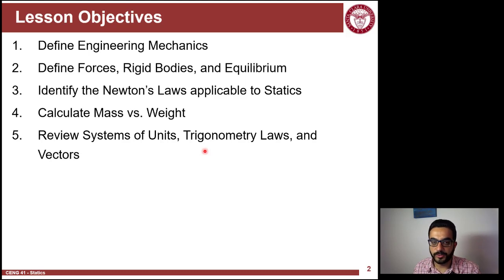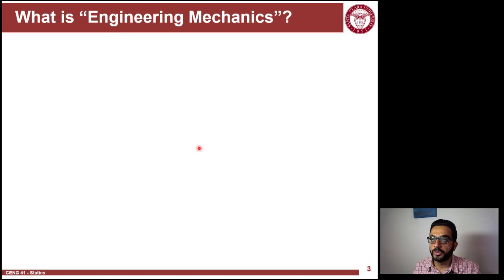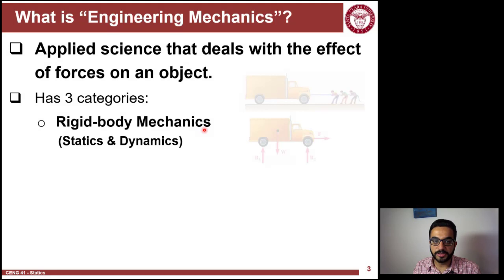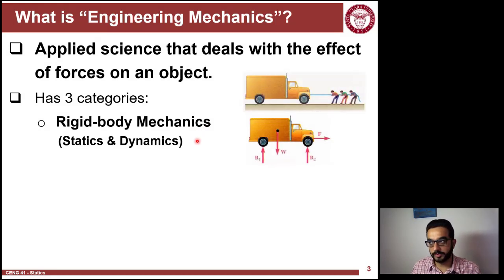What is Engineering Mechanics? It's an applied science that deals with the effect of forces on an object. There are three categories that relate to this definition. The first is rigid body mechanics, which is actually a big part of Engineering Mechanics.